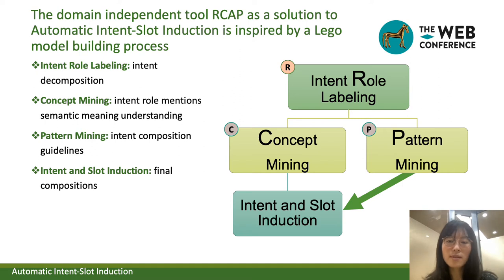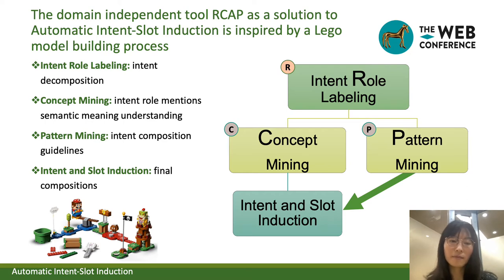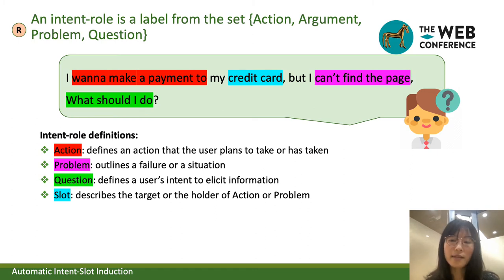Here we illustrate our three-step RECAP using the LEGO model building process. First, the internal role labeling process: we decompose intent, similar to disassembling a LEGO model into pieces and roughly sorting by color. Second, the concept mining process: we obtain the semantic information of each internal mention, similar to learning the position and function of each LEGO piece. Third, the pattern mining process: we achieve the internal composition guidelines, similar to studying the LEGO manual. At last, we follow the patterns, pick the correct concepts, and assemble them in the right place, arriving at a generative model of intent.